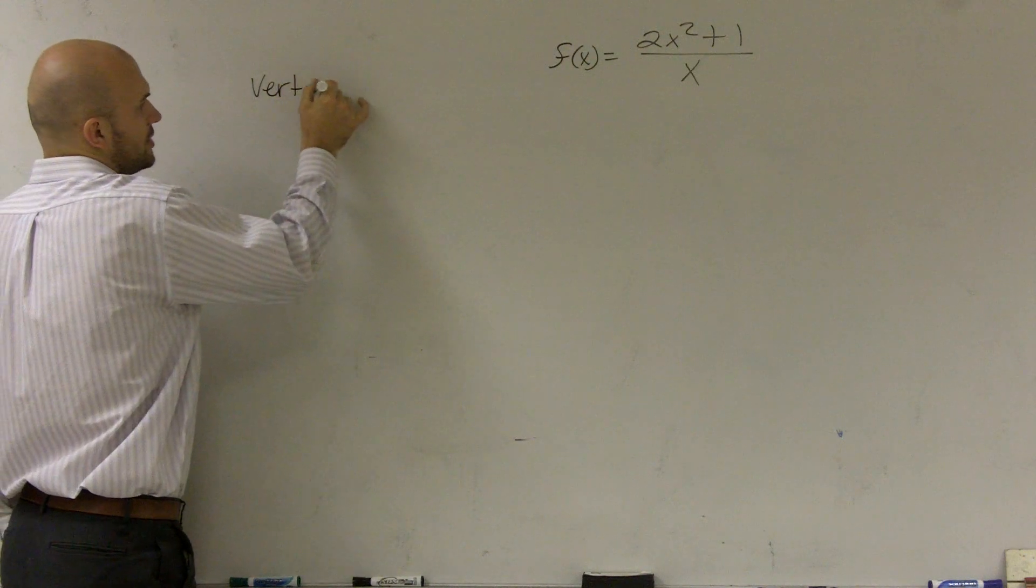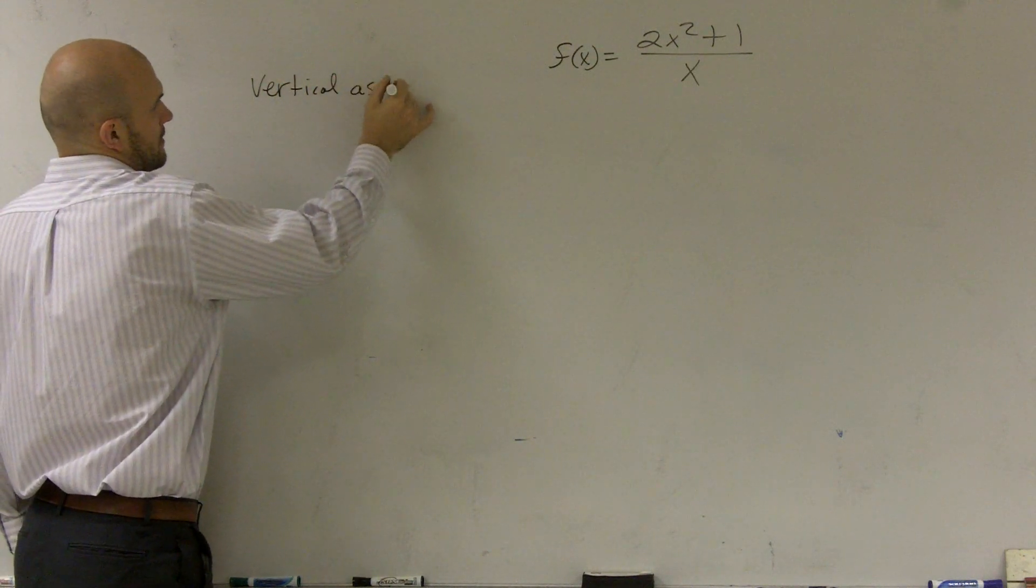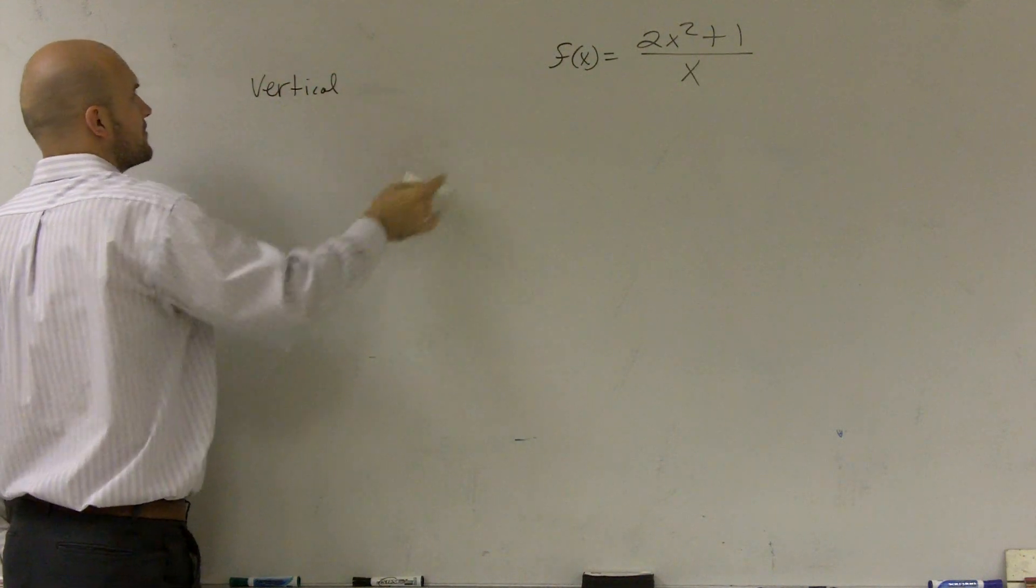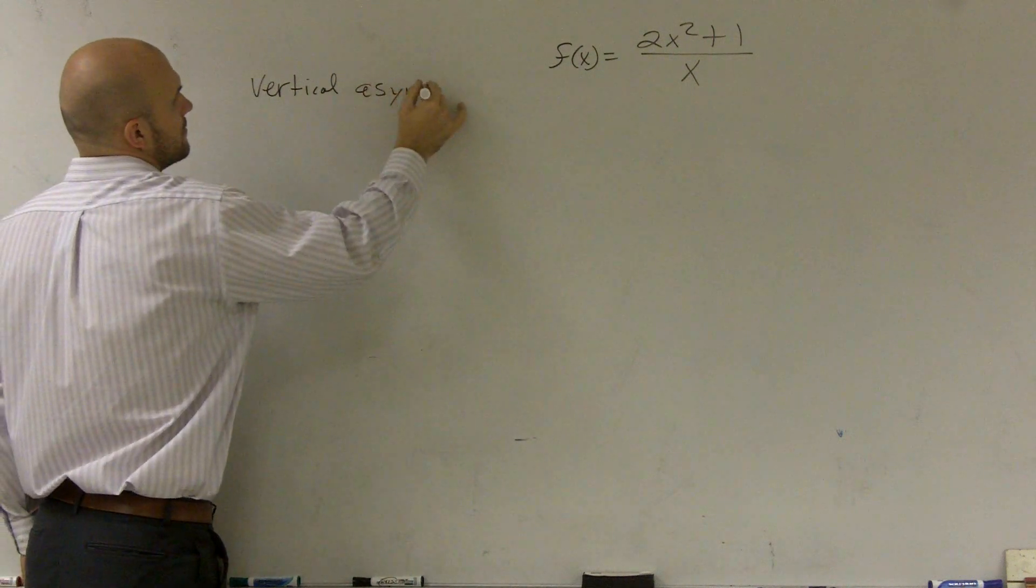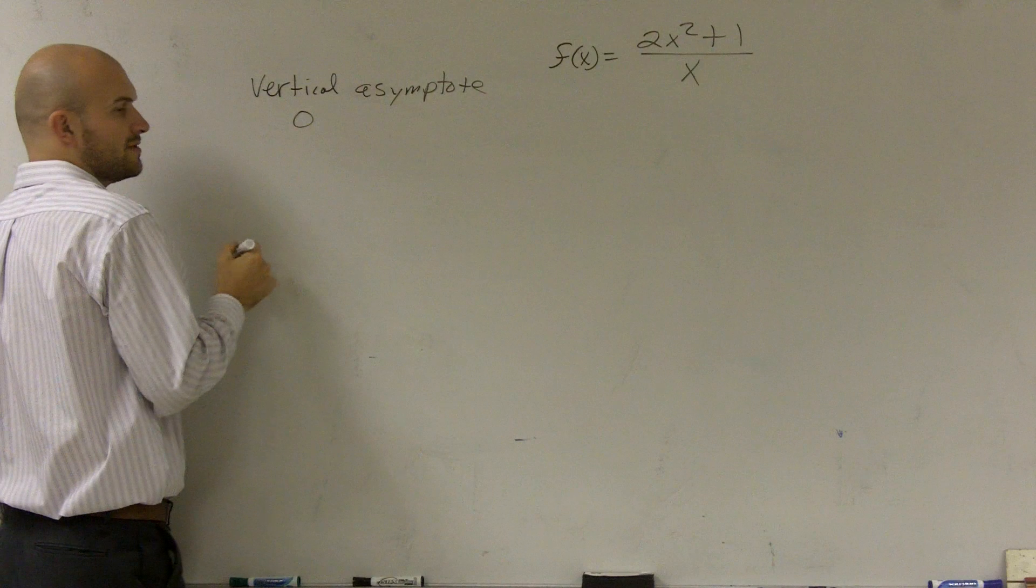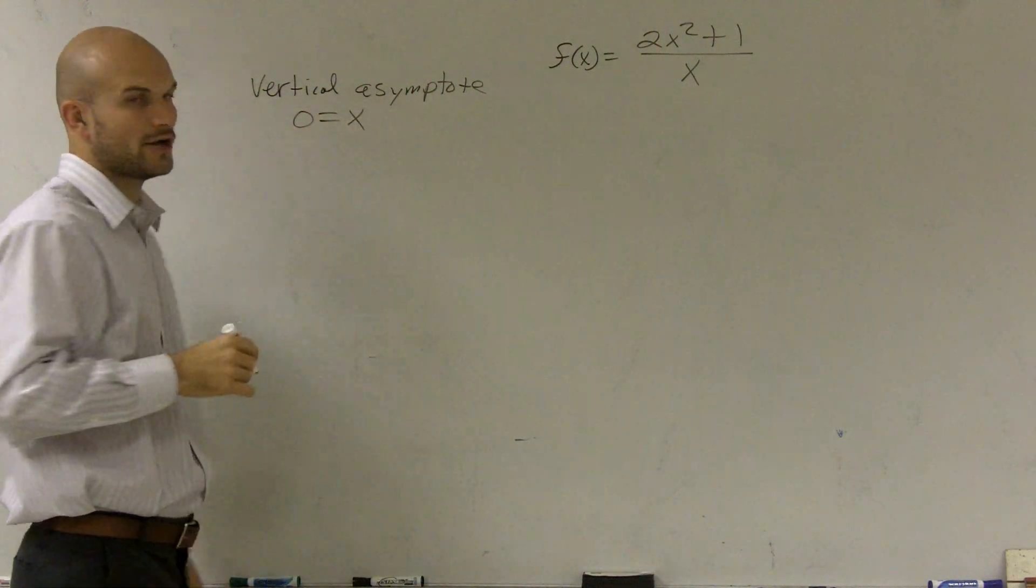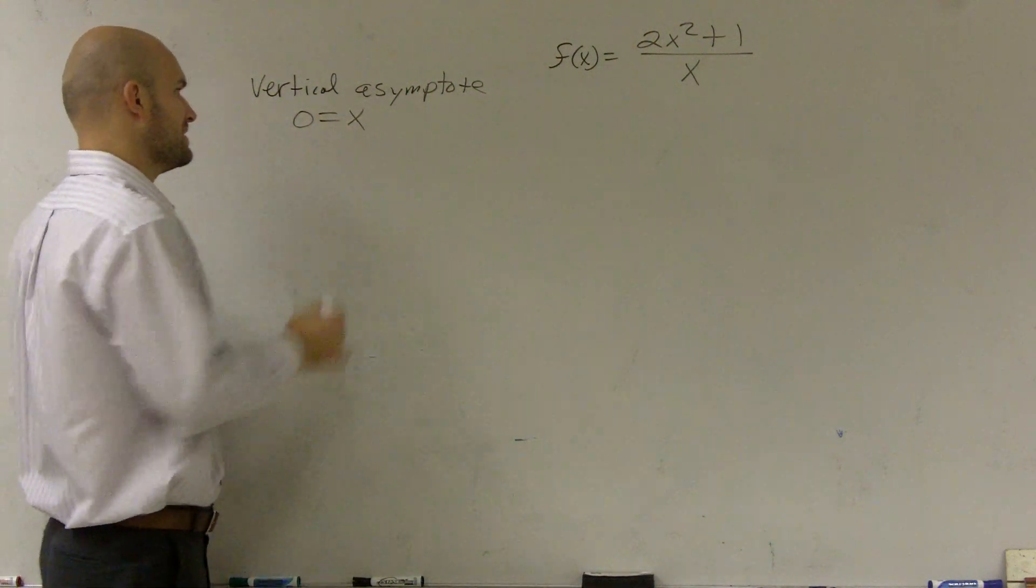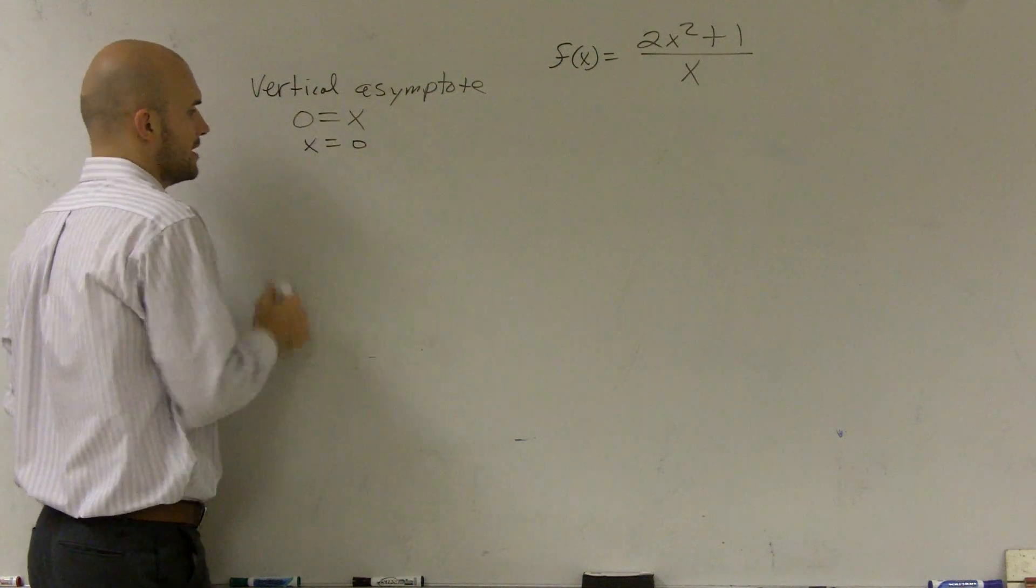So I write vertical asymptote. You just take the bottom of your function, the bottom of it equals zero. This one is pretty easy, x equals zero.